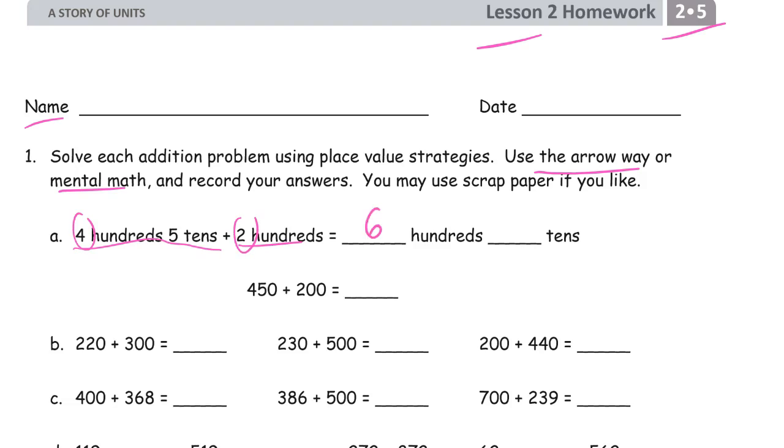And tens we're gonna have five tens but we're not adding any more so we still just have five tens. So that's 450, that's the 450. And this is the 200. So we need 6 hundreds 5 tens. That's 450 plus 200.